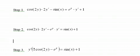The last step is to divide by this factor right here, two cosine two y minus e to the y. Divide both sides of the equation by that factor.